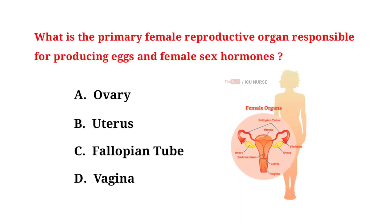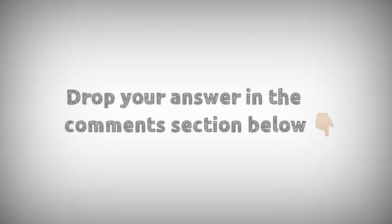What is the primary female reproductive organ responsible for producing eggs and female sex hormones? A. Ovary. B. Uterus. C. Fallopian tube. D. Vagina. Drop your answers in the comment section below.